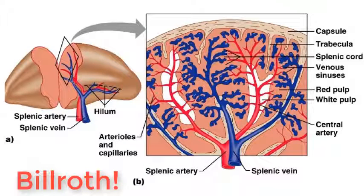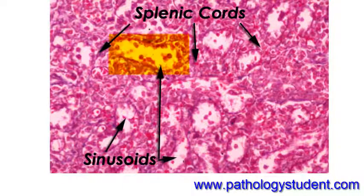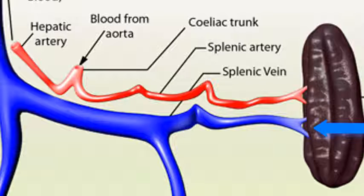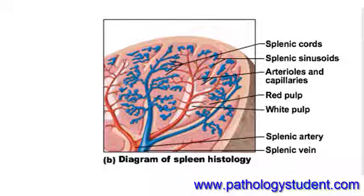The cords consist of a labyrinth of macrophages connected by long dendritic processes. Once in the cords, blood cells squeeze through the gaps in the cord endothelium to get into the sinusoids. Blood then flows from the sinusoids into the splenic vein and out of the spleen. This process takes time — it's sometimes called the slow compartment.